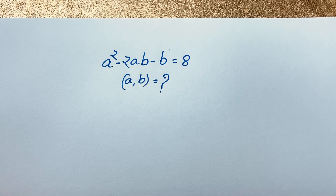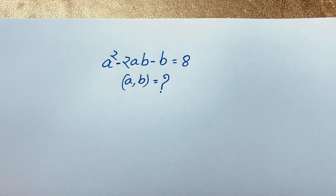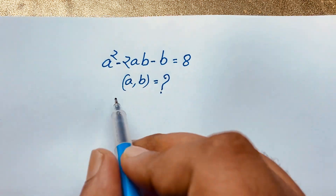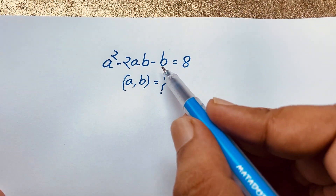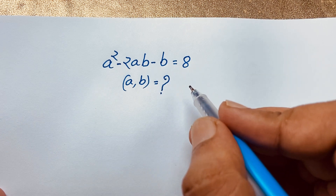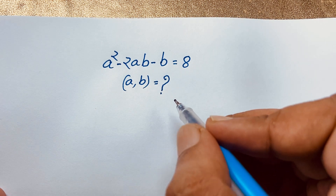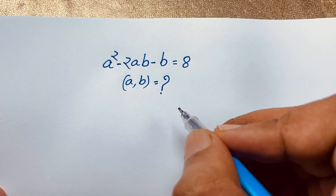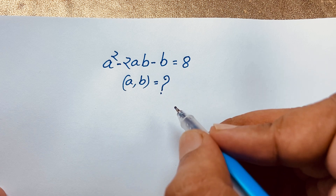Welcome to my YouTube channel. Today we are solving a nice olympiad algebra problem. The question is: a² minus 2ab minus b equals 8. Find ab. How to solve this interesting math problem.